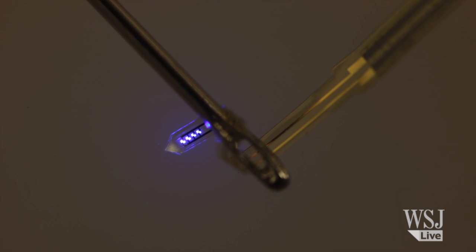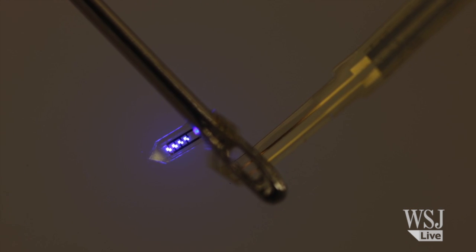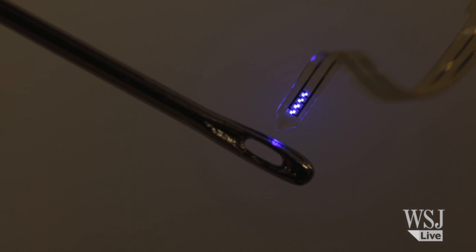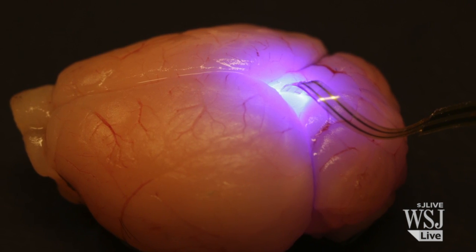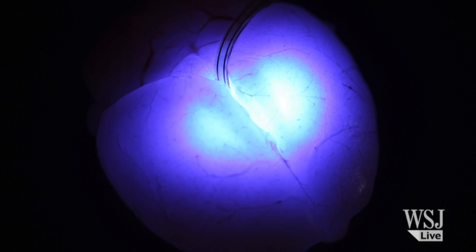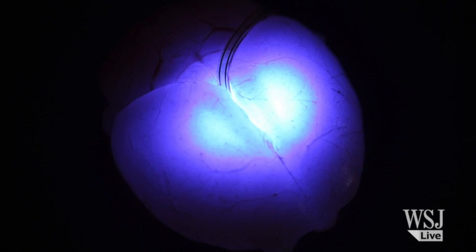Threaded on a wire one-fifth as thick as a human hair, these tiny lights can be injected into a living brain to activate special networks of light-sensitive neurons. Here, the lights are illuminating a rodent brain.